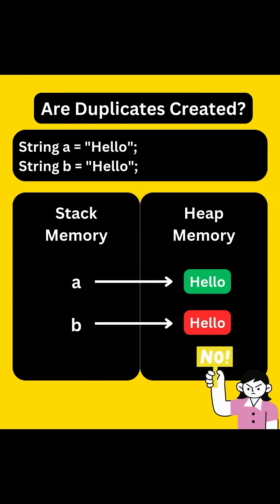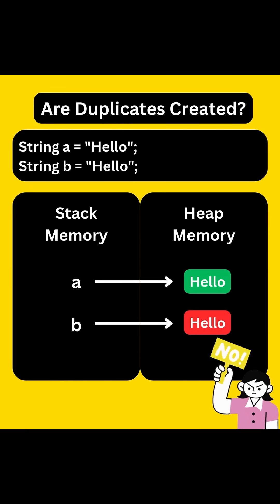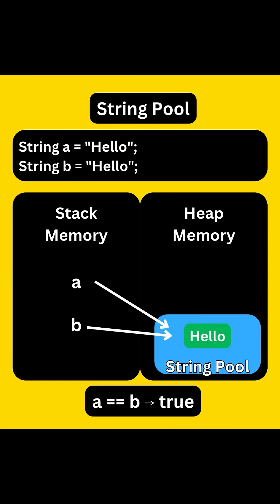Now let's say we write String B equals 'hello'. Would this create another 'hello' in memory? Remember, strings are immutable, so why duplicate them? Hence, instead of creating a new 'hello' every time, Java maintains a string pool — a special area in the heap that stores unique string literals. So now both A and B point to the same 'hello' in the pool, and hence A == B returns true.